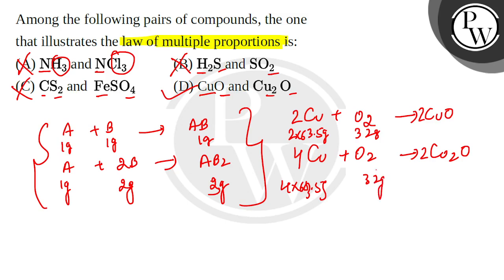So oxygen is constant, that is fixed. So the weight of copper is in the simplest whole number ratio. So what is the first? 2 into 63.5. And what is the second? 4 into 63.5. So this will be 1 by 2. It is the simplest whole number ratio.